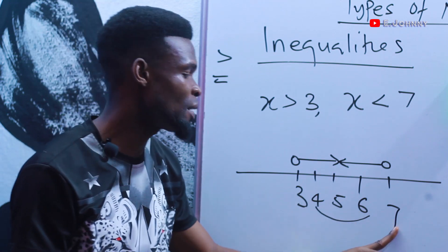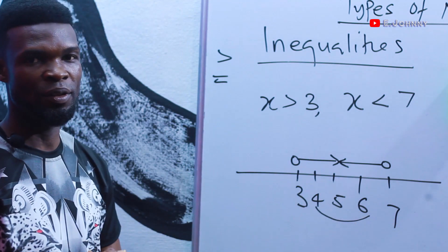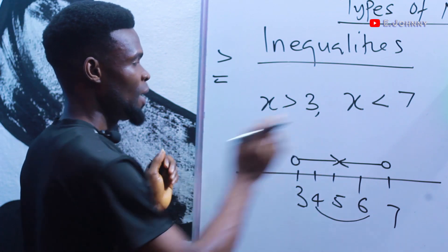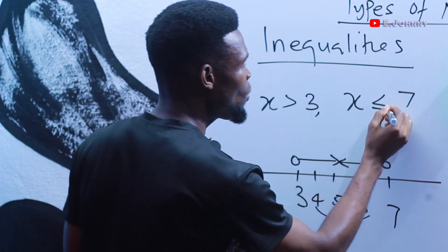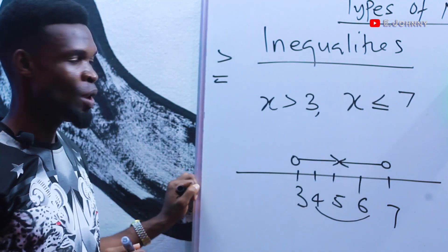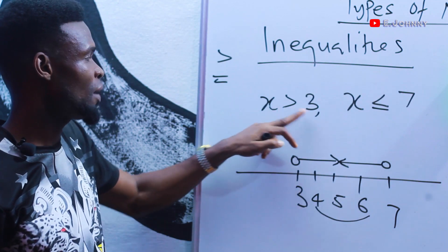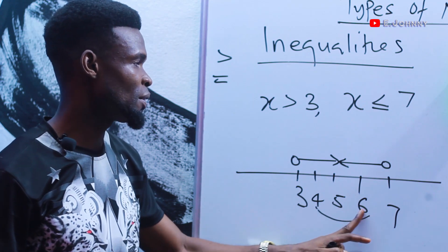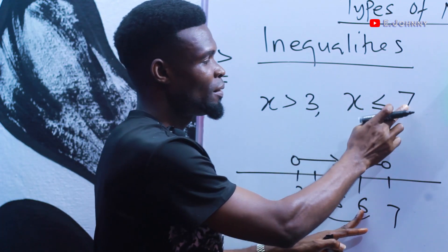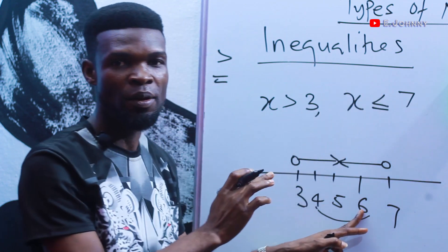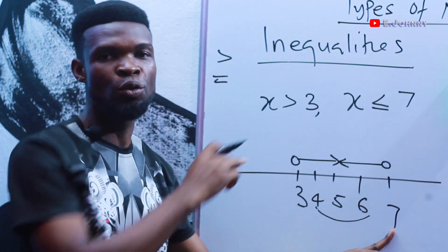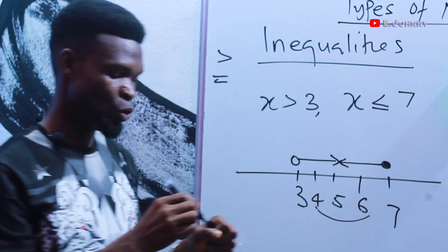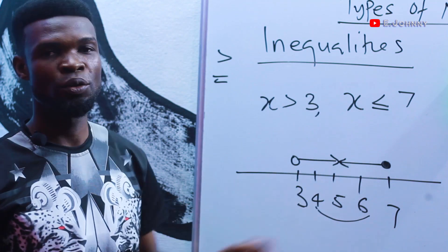However, if we say x is greater than three and x is less than or equal to seven, then seven is inclusive. We start from four — since three is not included — pick five, six, and also seven since the statement includes equals to seven. On the number line, we shade the circle at seven to show it is inclusive.